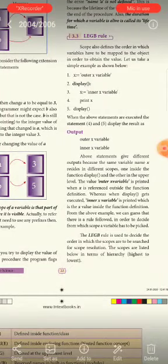LEGP Rule. Scope also defines the order in which variables have to be mapped to the object in order to obtain the value. Scope defines the order to obtain the value.